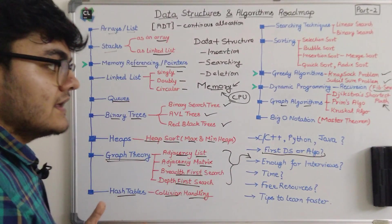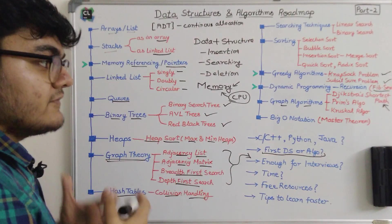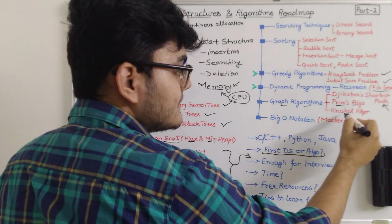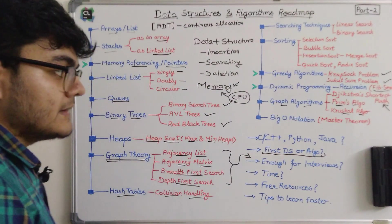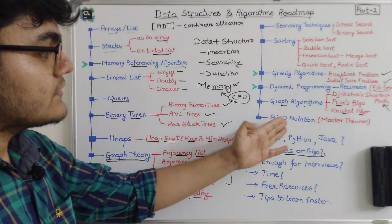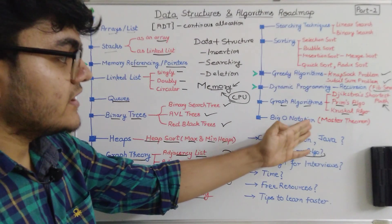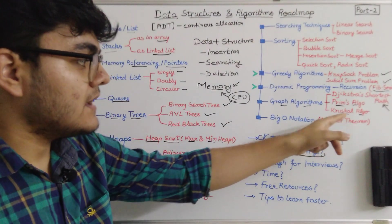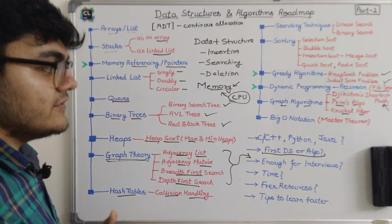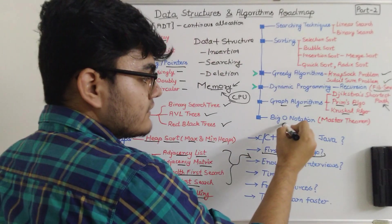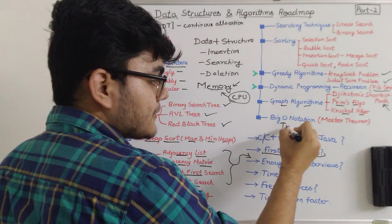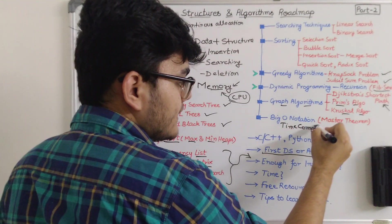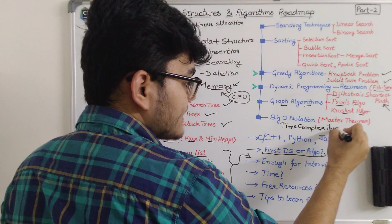The graph algorithms include Dijkstra's shortest path algorithm — a very important algorithm you will use a lot in various fields of computer programming — and then Prim's algorithm and Kruskal's algorithm. Finally we have Big O notation, and in that there is a concept called the master theorem, which is used to find the time complexity of a particular algorithm.